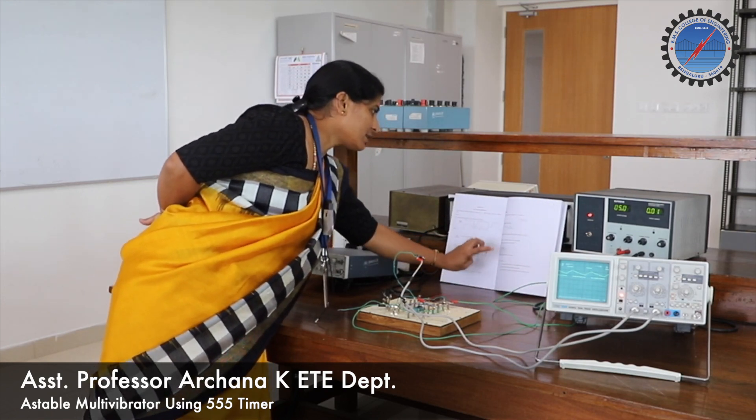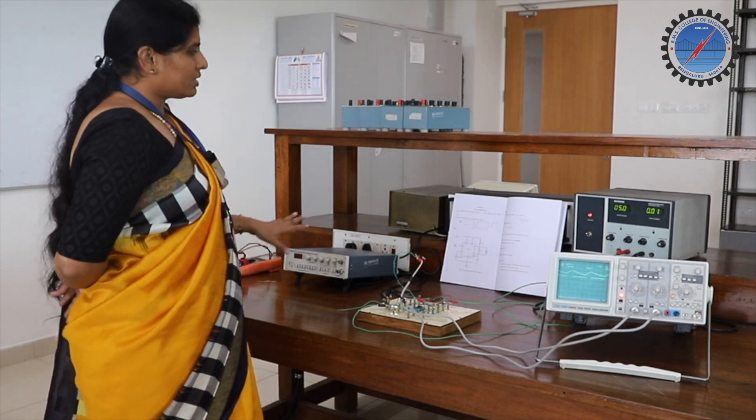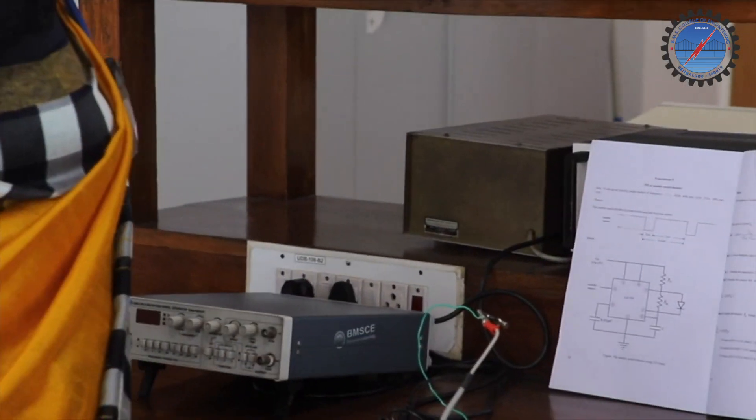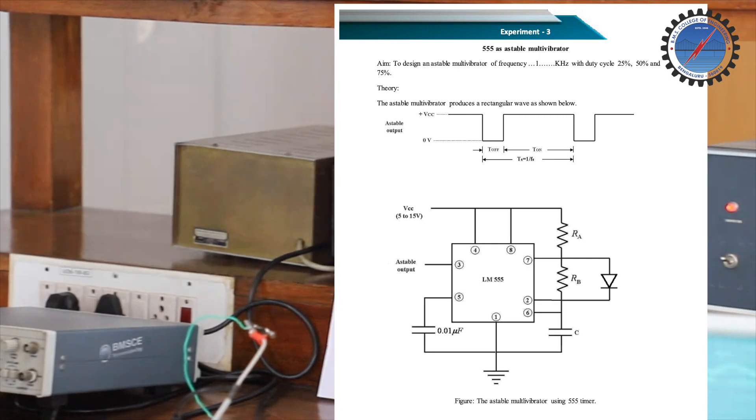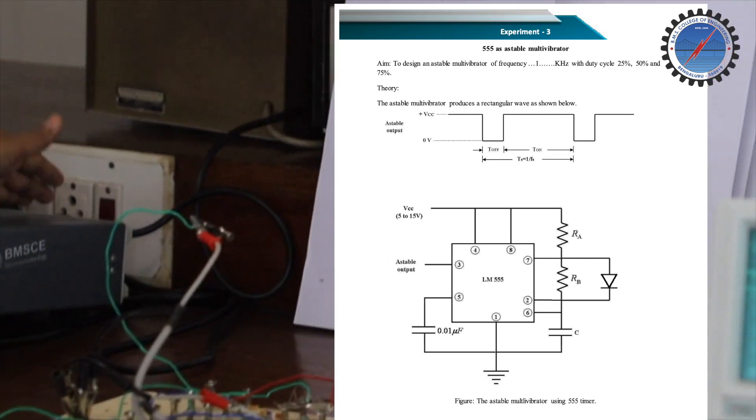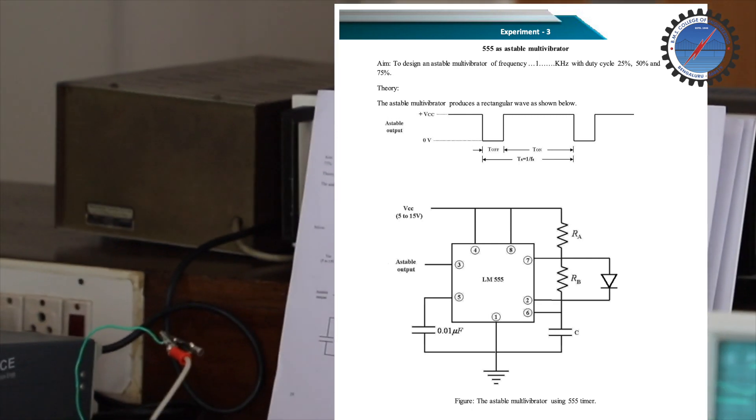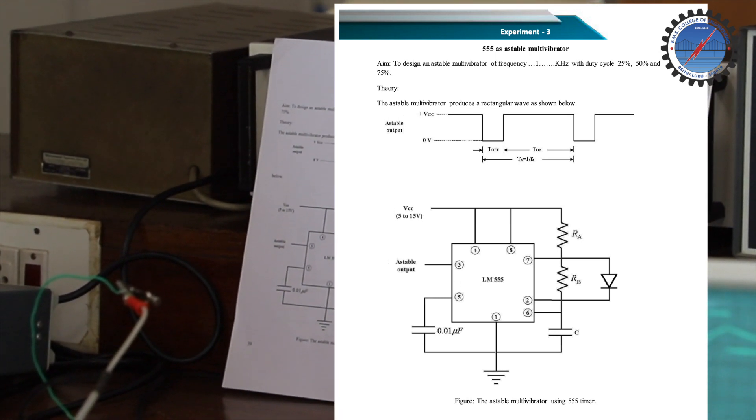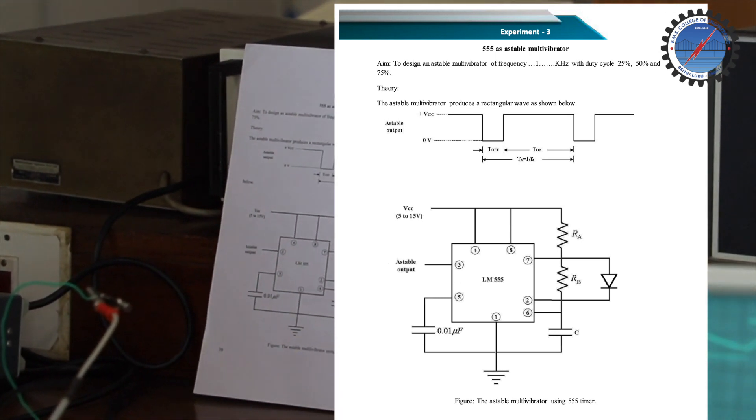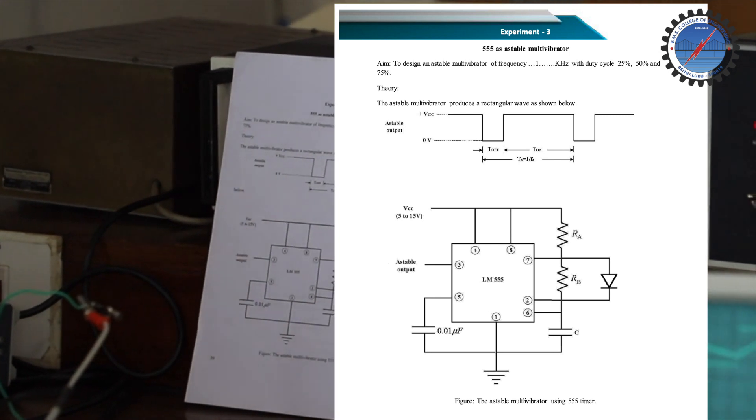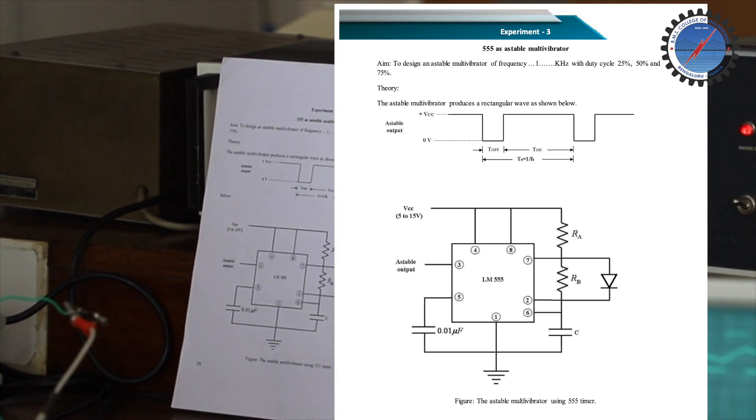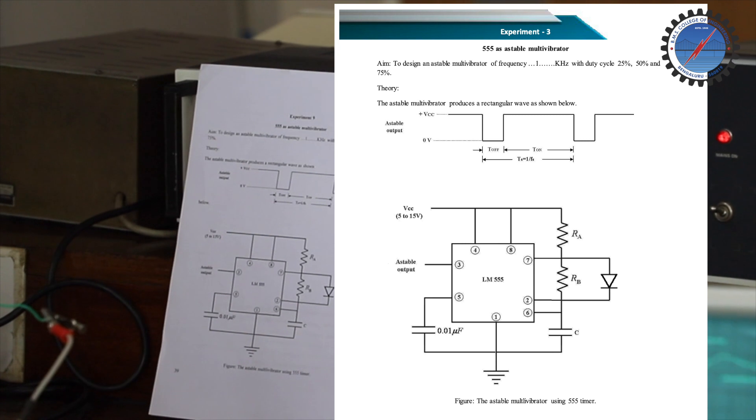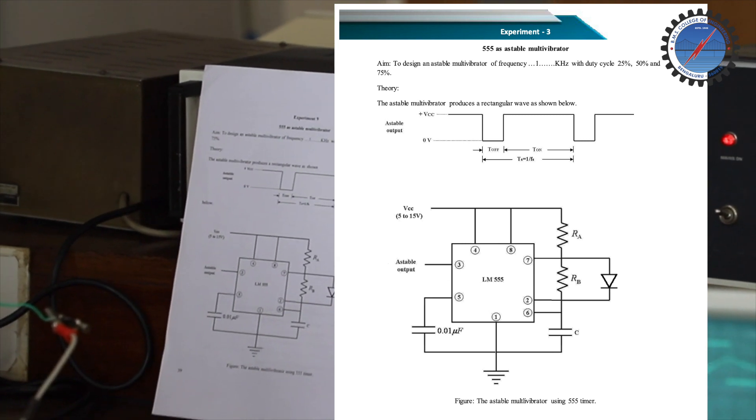How do we design using 555 timer? This is the circuit where the power supply connected to the 555 timer ranges from 5 volts to 15 volts. The resistor and capacitor values will decide the duty cycle. Based on the duty cycle you have to design, you select RA, RB, and capacitor value accordingly.